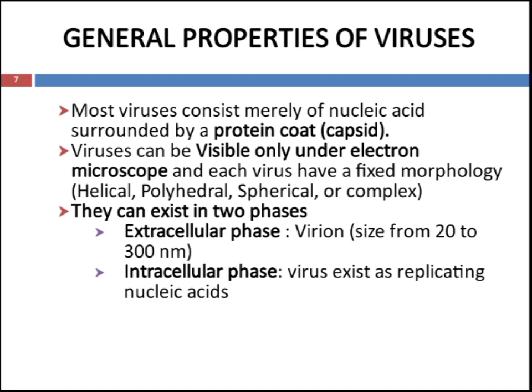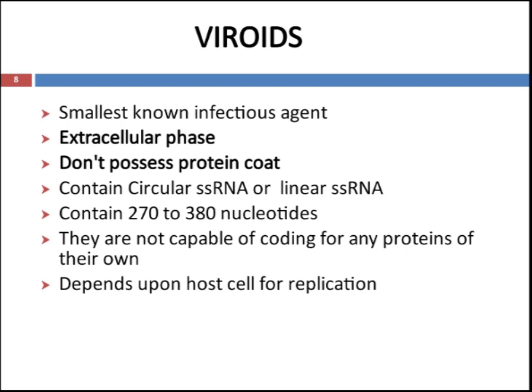Viruses can be visible only under an electron microscope and each virus has a fixed morphology — it may be either helical, polyhedral, spherical, or a complex structure. Viruses can exist in two phases: the extracellular phase, known as virions, with a size range from 20 to 300 nanometers, or as an intracellular phase. Viroids are the smallest non-infectious agents; they do not possess protein coating and contain circular or linear single-stranded RNA containing 270 to 380 nucleotides. They are not capable of coding for any proteins and depend on the host cell for replication.